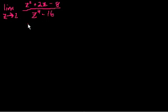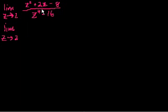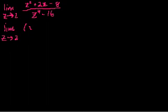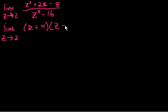Nine times out of 10, when you see a problem like this where both the numerator and denominator look factorable, the solution is to factor them. So this is equal to the limit as z approaches 2. For the numerator: two numbers that add to positive 2 and multiply to minus 8 — that's plus 4 and minus 2. So it factors into z plus 4 times z minus 2.